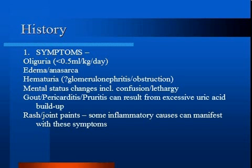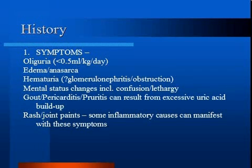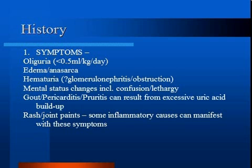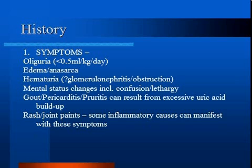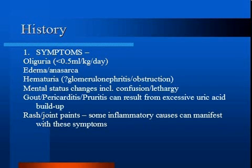The history is focused around symptoms and determining the etiology. Ask the patient how often they are urinating, or record urine output if accurately measured. A patient with proteinuria may have generalized edema due to low oncotic pressures. Hematuria may suggest glomerular nephritis or an obstructive cause. Renal failure causes buildup of waste products, termed azotemia, which can cause altered consciousness. Uric acid can cause gout, pericarditis, and itchiness. Rash or joint pains may suggest vasculitis.